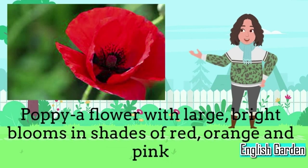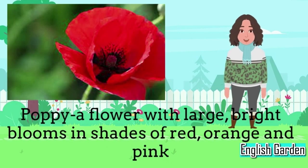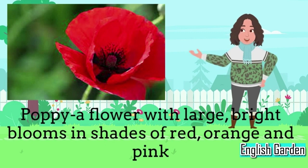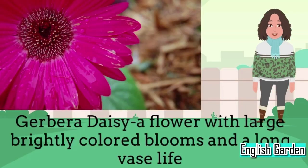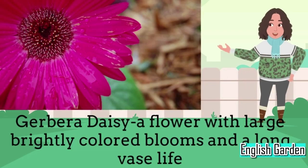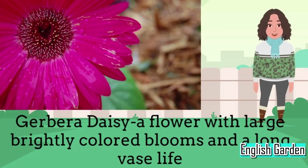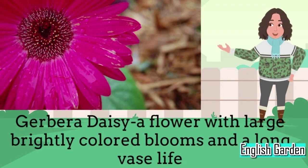Poppy: a flower with large, bright blooms in shades of red, orange, and pink. Gerbera daisy: a flower with large, brightly colored blooms and a long vase life.